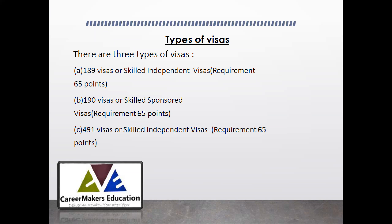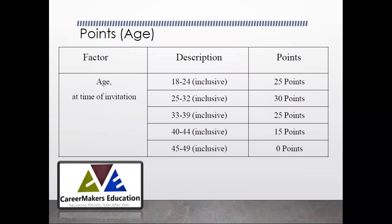Coming back to visas in Australia, there are predominantly three types of visas: Visa Subclass 189, which is the skilled independent visa; Visa Subclass 190, which is the skilled sponsored visa; and finally, Visa Subclass 491.